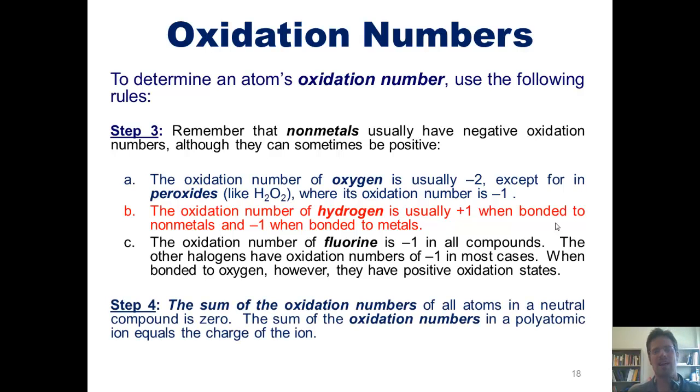Step four: the sum of the oxidation numbers of all atoms in a neutral compound is zero. The sum of the oxidation numbers in a polyatomic ion equals the charge of that ion.